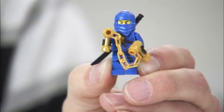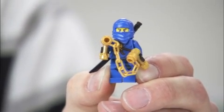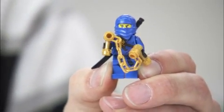But first I'm going to show you this guy. This is Jay, he also comes in the box. It's the Blue Ninja. He has these golden nunchucks.